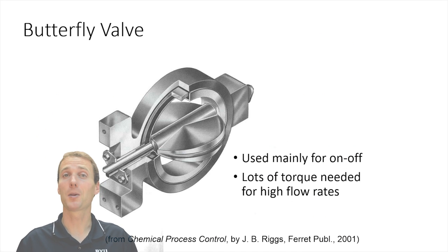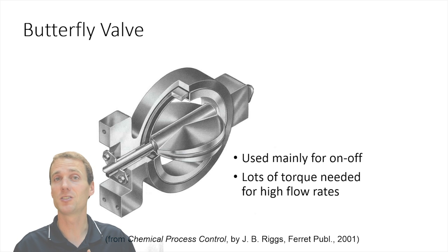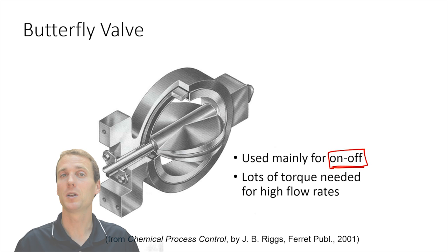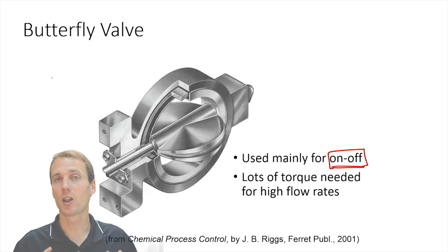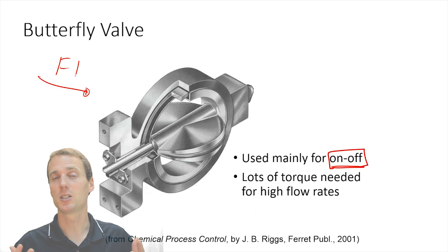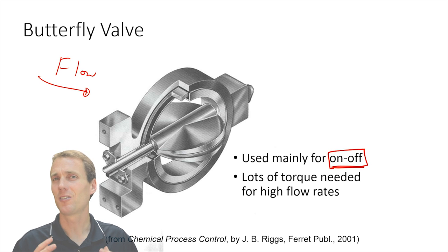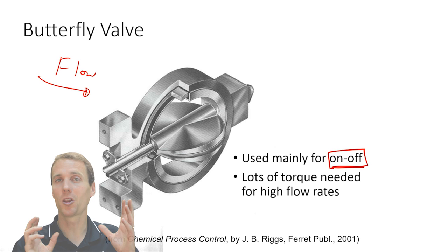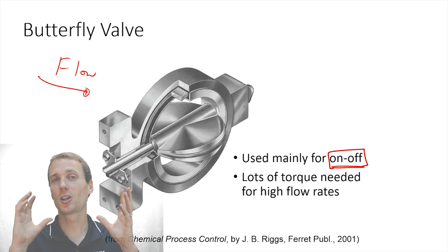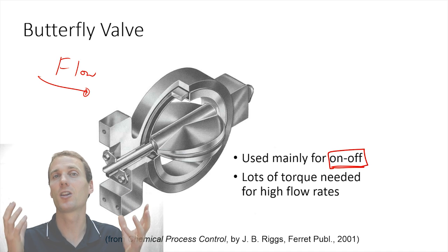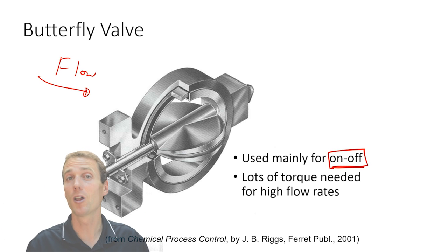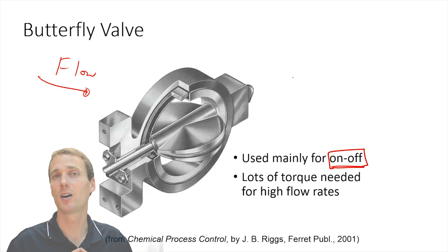Let's go on to a butterfly valve. A butterfly valve is very good for on-off type control. When it's fully open, there's very low frictional loss within the valve and we can achieve very low energy losses due to the valve. But then it will close very quickly and shut off the flow. If you had very fine control, as you close that valve just slightly, it's going to have a very large change in the flow that goes through that valve. So this one may not be the best valve for very fine-tuned control of a flow.